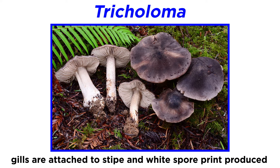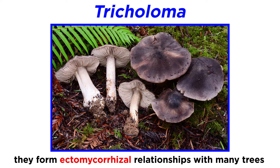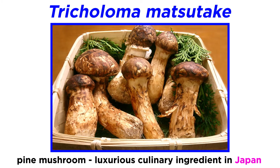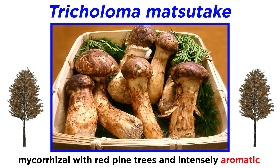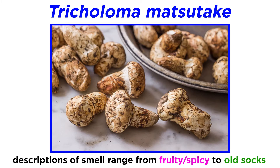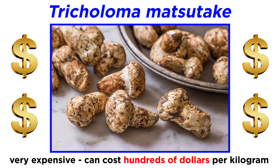Tricholoma is a large genus of mushrooms with gills attached to the stipe and white spore prints. They form ectomycorrhizal symbiotic relationships with a variety of trees. Tricholoma matsutake, commonly called matsutake or pine mushroom, is a luxurious ingredient in Japan. Mycorrhizal with Japanese red pine, matsutake is known for its intense, unique aroma and signifies the arrival of fall in Japan. Descriptions of the smell range from fruity and spicy to smelling like old socks. Kilograms of these mushrooms can be sold for hundreds of dollars.